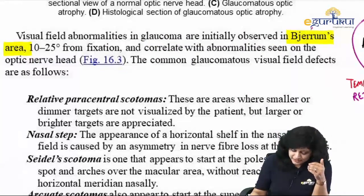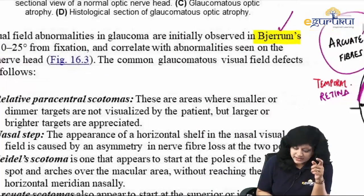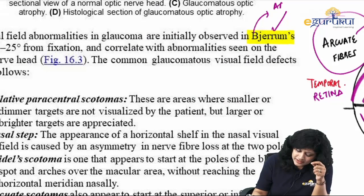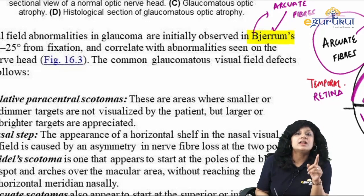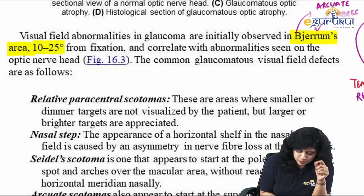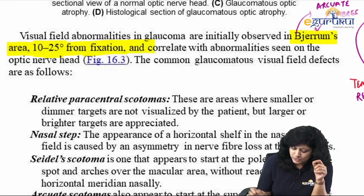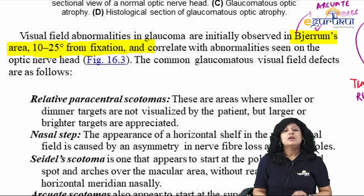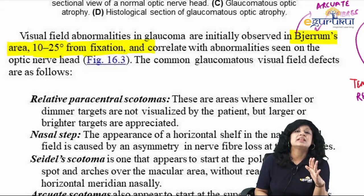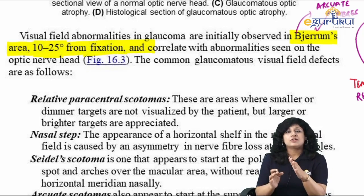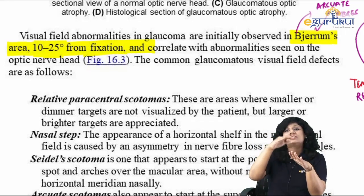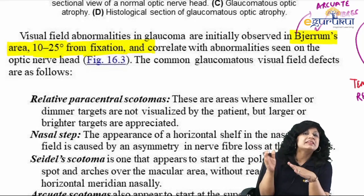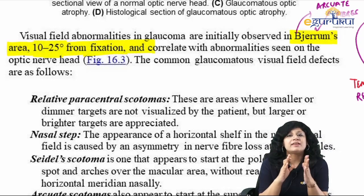Bjerrum's area is actually the arcuate area. These arcuate fibers in the temporal retina from 10 to 25 degrees from fixation correlate with abnormalities — this is the area most sensitive to glaucoma's damage. Therefore, the nasal visual field is first affected, and the corresponding scotoma is called Bjerrum's scotoma.